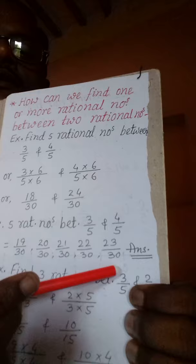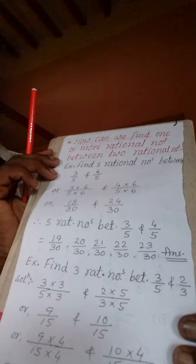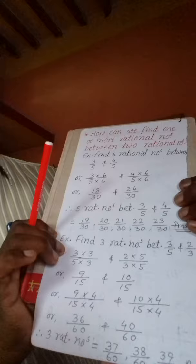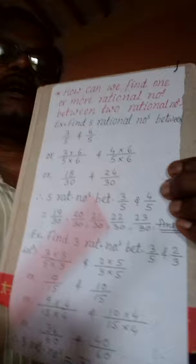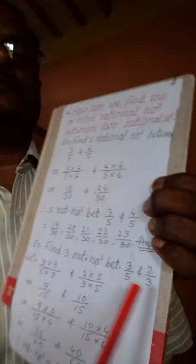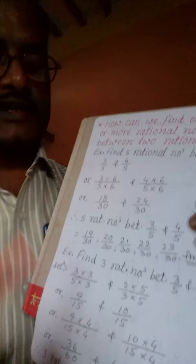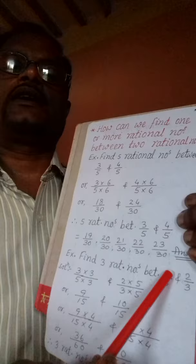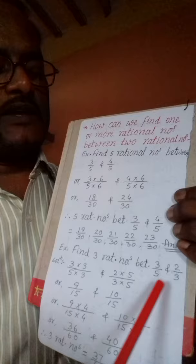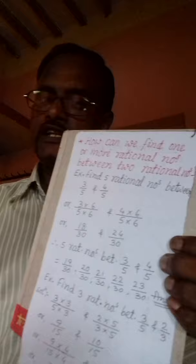एक और example लेते हैं — find three rational numbers between 3 by 5 and 2 by 3। मैंने एक ऐसा example लिया है जिसका denominator same नहीं है। यहाँ बताया कि denominator हमेशा same होना चाहिए — अगर नहीं है तो same करेंगे। first rational number में second वाले के denominator से multiply कर देना है, और second वाले में first के denominator से multiply कर देना है। ऐसा करने से denominator equal हो जाएगा।